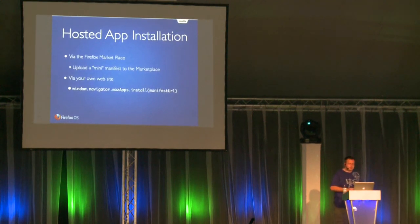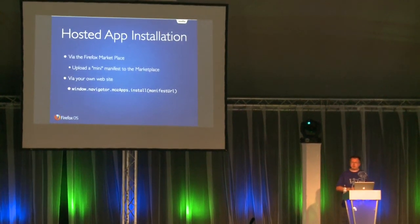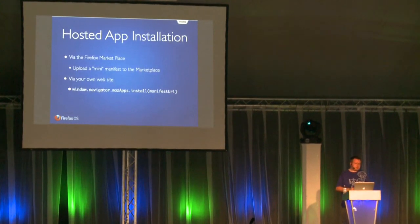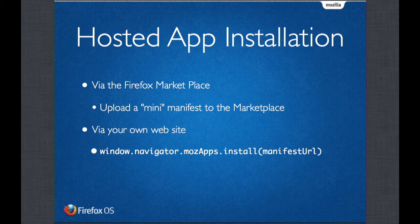How do you install applications? You can upload them to the Firefox Marketplace, which is Mozilla's hosted app store. It's a really good way to make your app discoverable — we have a great search engine there, and it's also indexed by the phone, so if your app has Twitter in the name and you search for Twitter on your phone, it will show you there's an app on the Marketplace you might want to install. But you can also install it on your own website — just create a button or link that calls window.navigator.mozApps.install and point it to that manifest file.